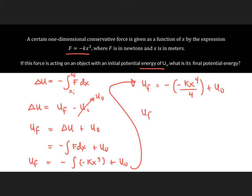So we will have our U final is equal to positive kx to the fourth power over 4 plus U₀. And this is the final potential energy of the object.